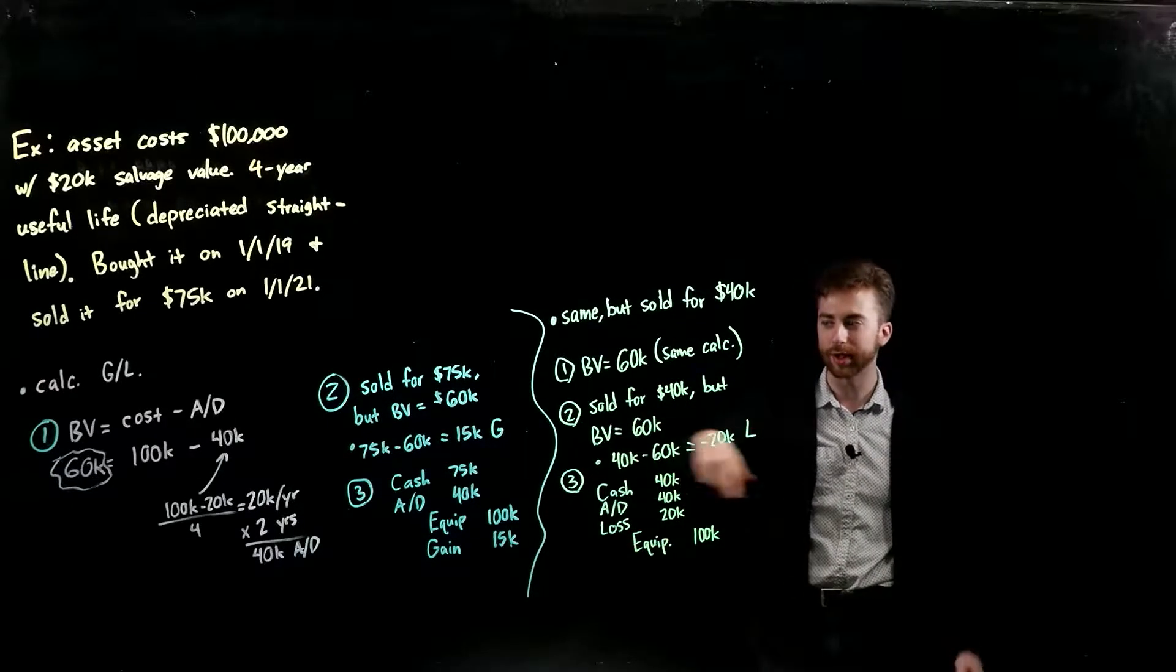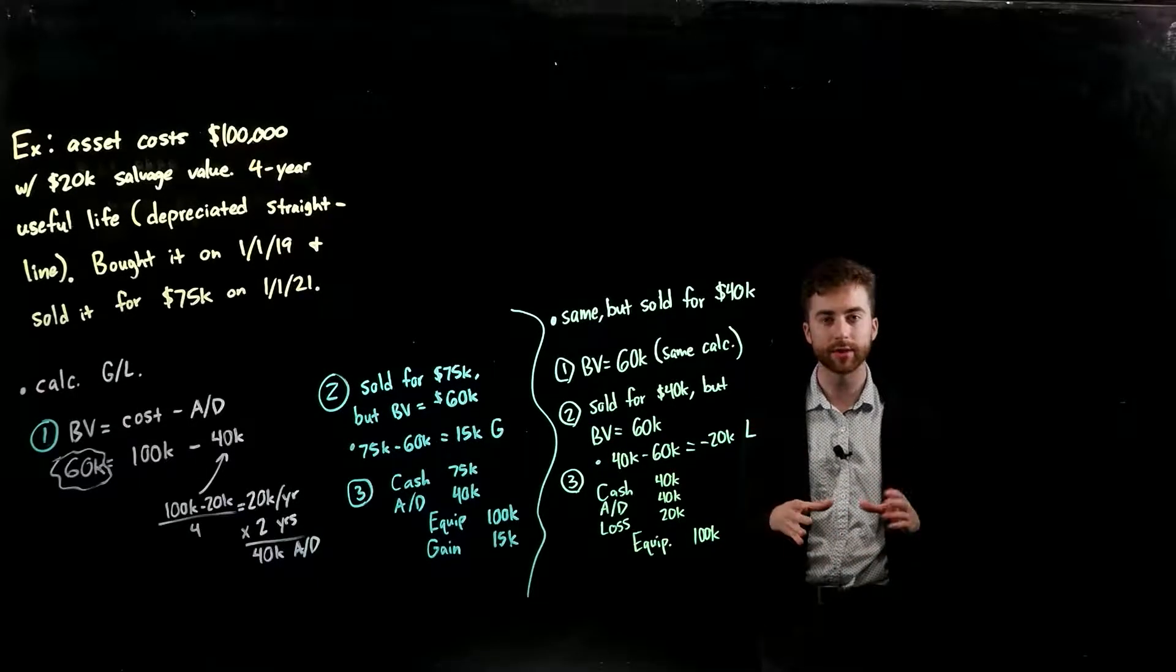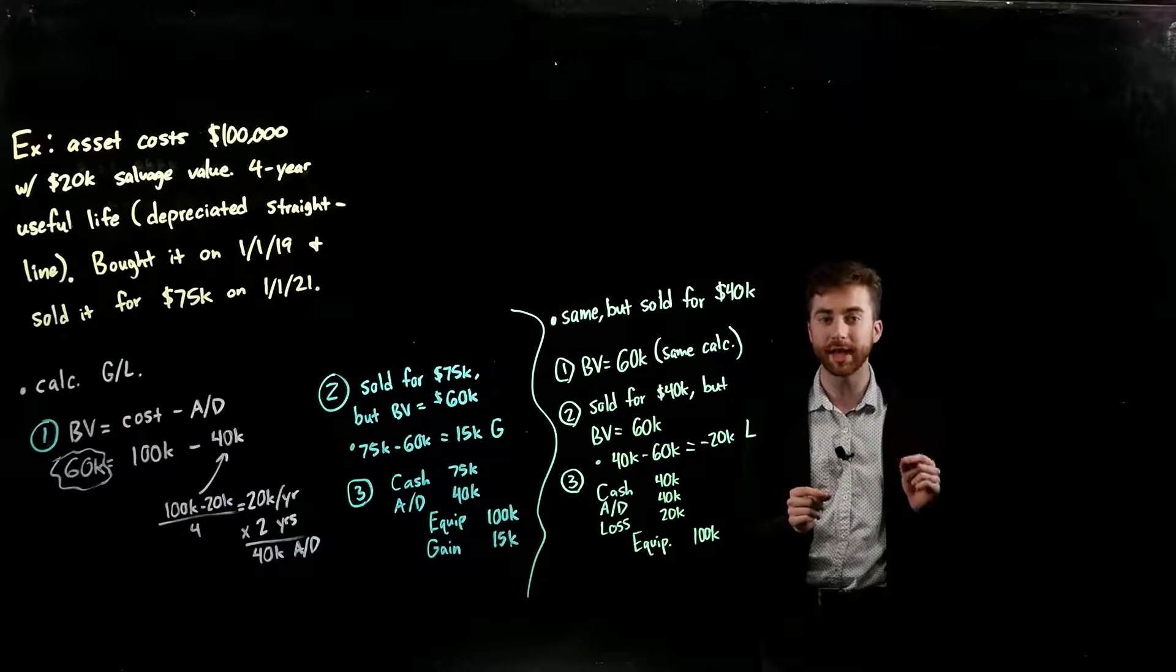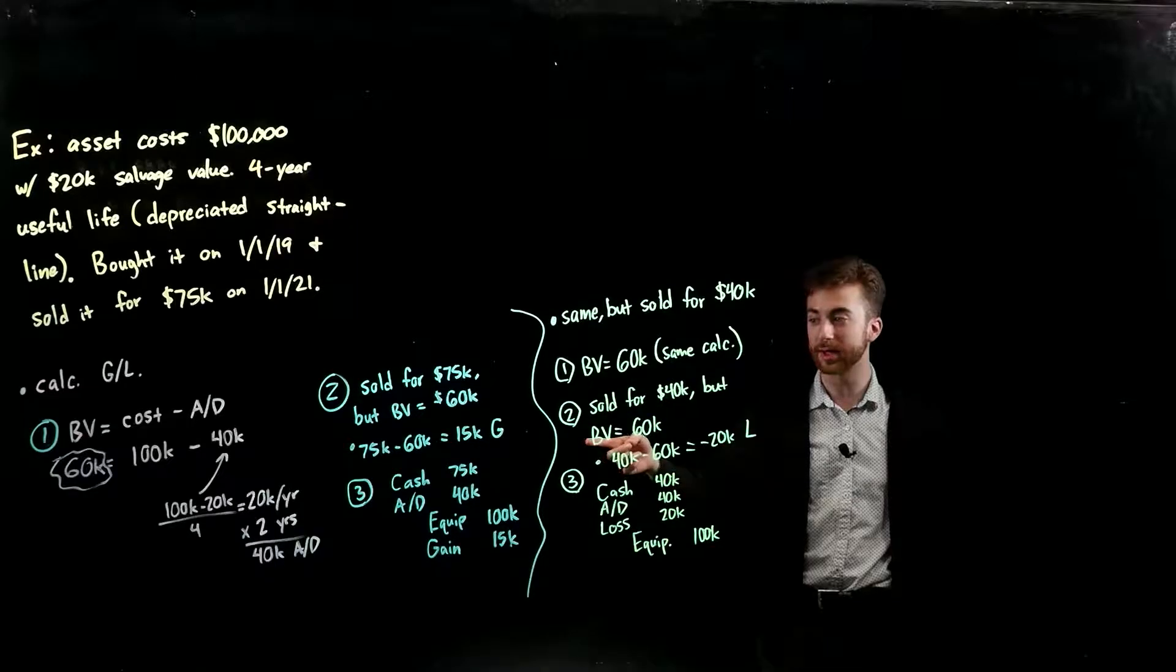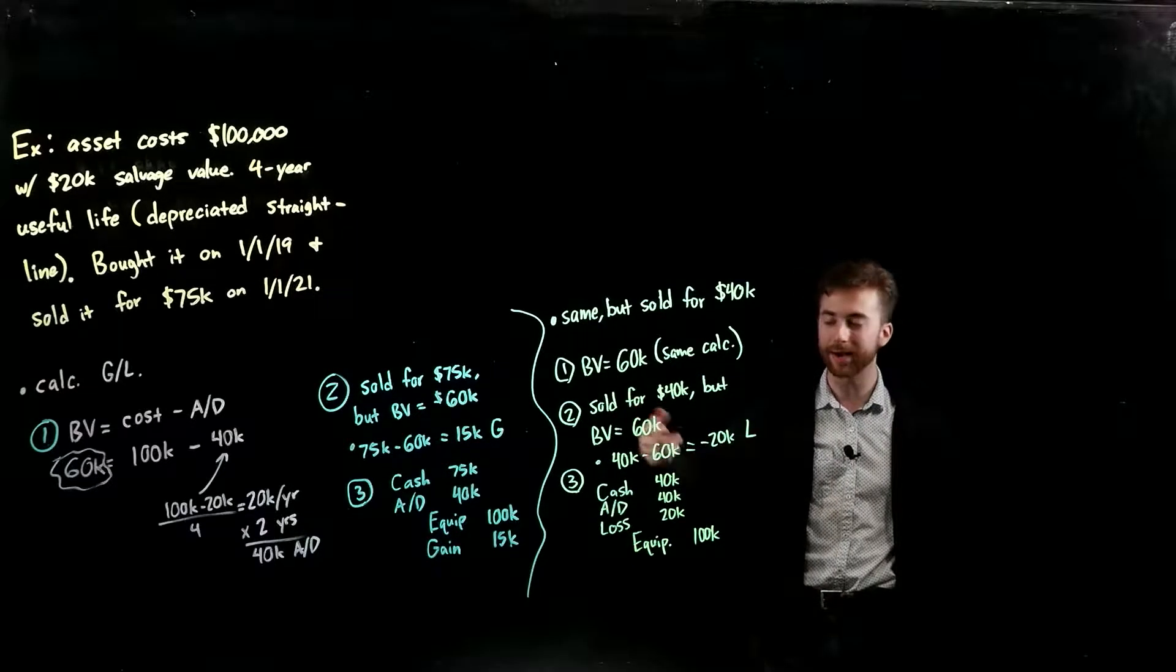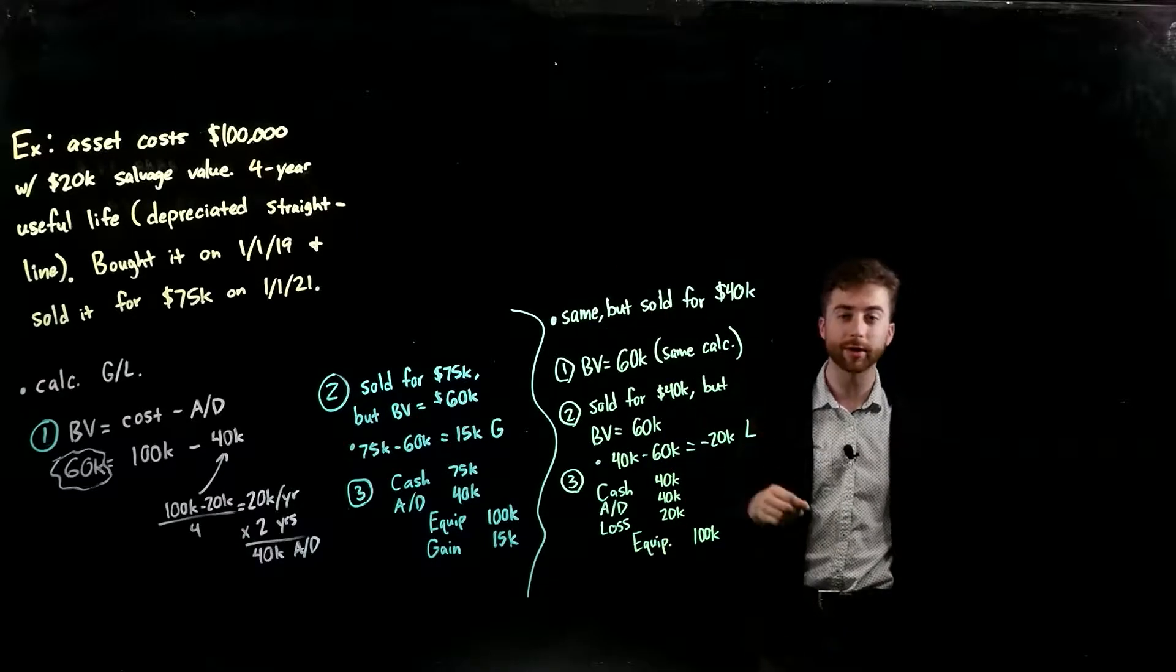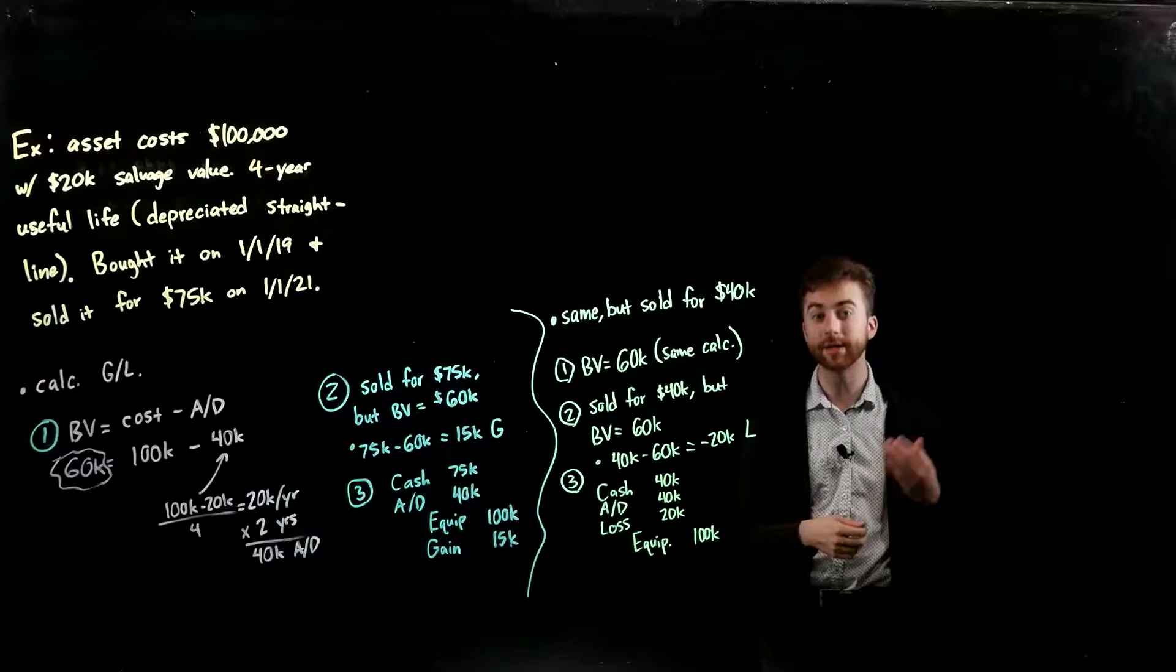The accumulated depreciation, however, I had to do a separate calculation for that. If we're depreciating it straight line, that means the formula we're using is your cost minus your salvage value, take that value and divide it by your useful life. So we have $100,000 cost, a $20,000 salvage value, cost minus salvage value is $80,000 divided by a four year useful life is going to give you $20,000 a year in depreciation.